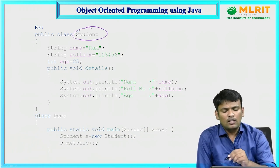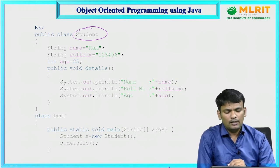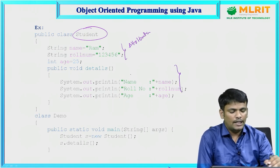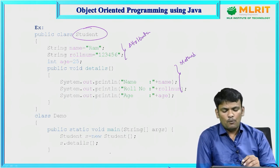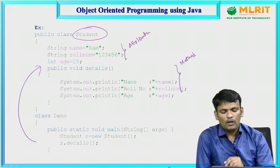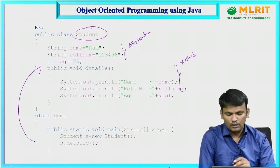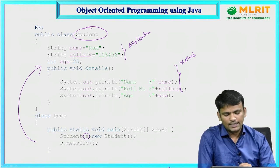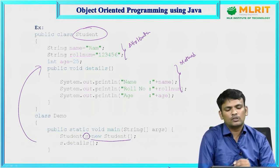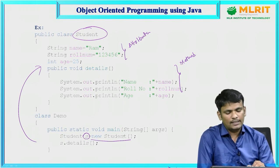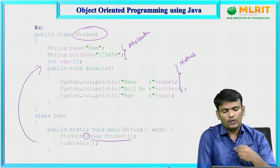Here I have a class named 'Student' with attributes: name, roll number, and age, and a method called 'details'. To access anything in the class, first create an object. Here the object is: Student s = new Student(). Once the object is created, instance data gets initialized — name = 'Ram', roll number = 123456, age = 25.